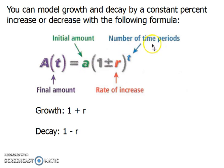And then the number of time periods, which is your t. And then the rate of increase. So is it increasing by 10%, 5%, or is it decreasing by 3%? And then, obviously, your final amount is your output or your solution. So growth, you would add. Decay, you would subtract.